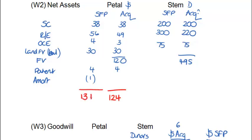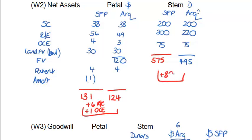At acquisition, net assets are 124. At the SFP date they're 131. We're going to split the increase between the movement in OCE — OCE has moved from 3 to 4, so that's an increase of 1 — and the balance of the increase. If the increase is 7 and one of that's due to movements in OCE, then the balance of 6 must be due to movements in retained earnings. We've got a figure of 575 for STEM, so therefore STEM's net assets have increased by 80 million DINAS.